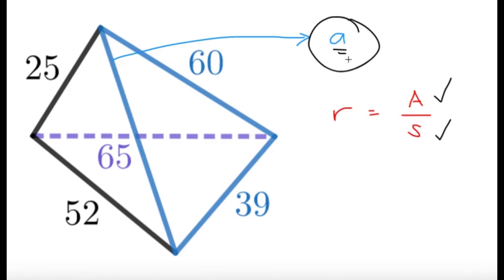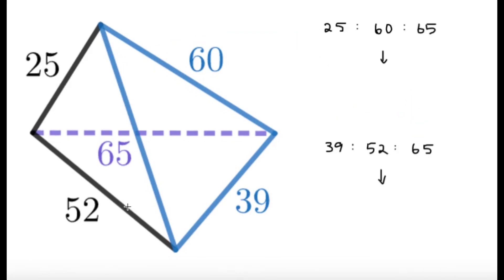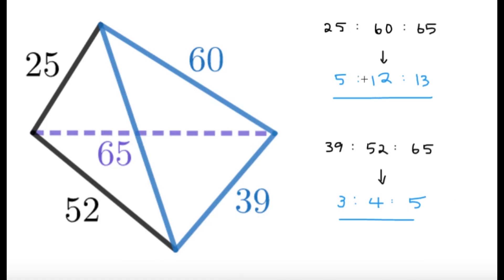So our goal is probably to get A first, because without it, it's hard to get the area or the semiperimeter. After we get A, we have three sides and can get the semiperimeter and solve the area by Heron's formula. Let's make some observations about the lengths — that's essentially the only given we have. So: 25, 60, 65 and 39, 52, 65. Taking the ratios in simplest terms, I get 5:12:13 and 3:4:5 — both very famous Pythagorean triples. This suggests that 25-60-65 and 39-52-65 are both Pythagorean triples.